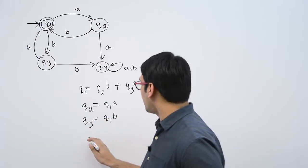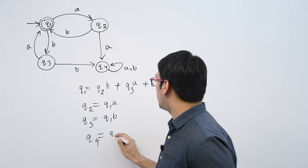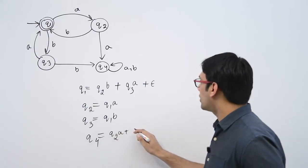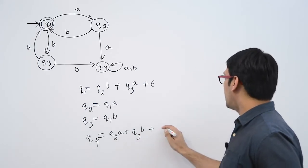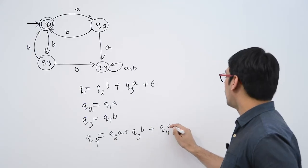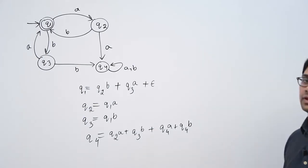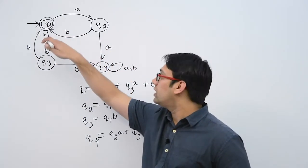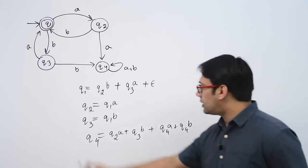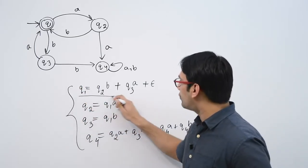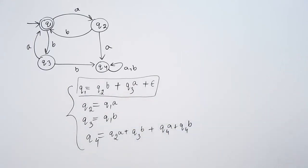For Q4, you can only reach Q4 if you see A on Q2, or B on Q3, or A at Q4, or B at Q4. In this complete finite automata there is only one final state, which is Q1. So in all these expressions, if we can solve by removing Q2 and Q3 using the appropriate substitutions, we can get a regular expression.